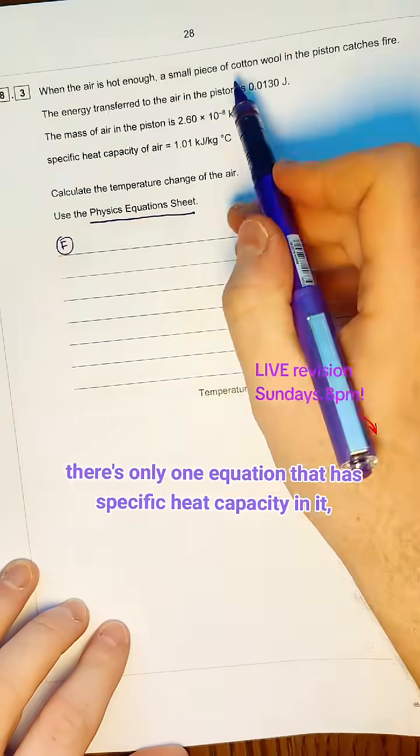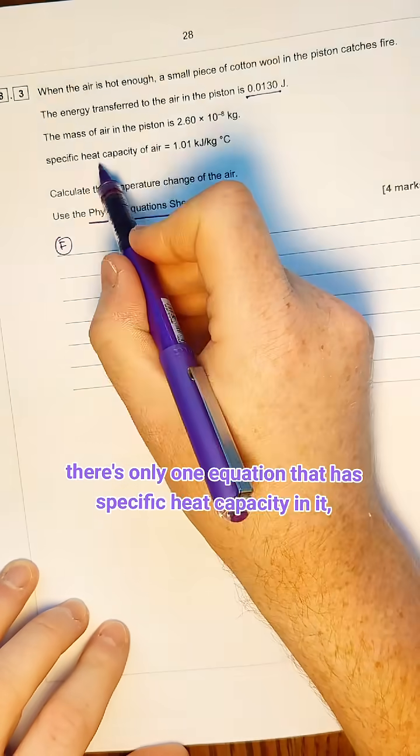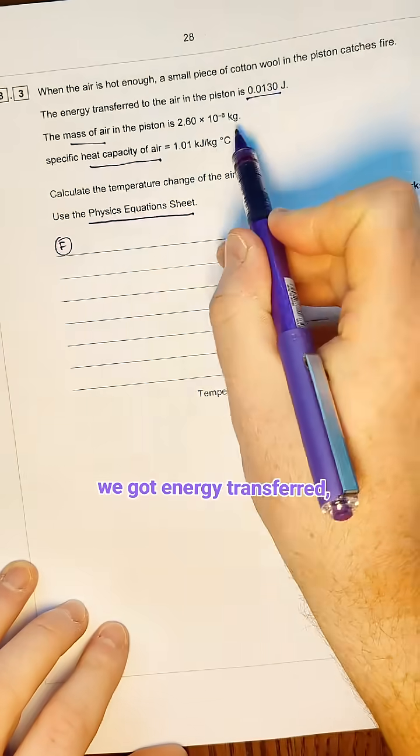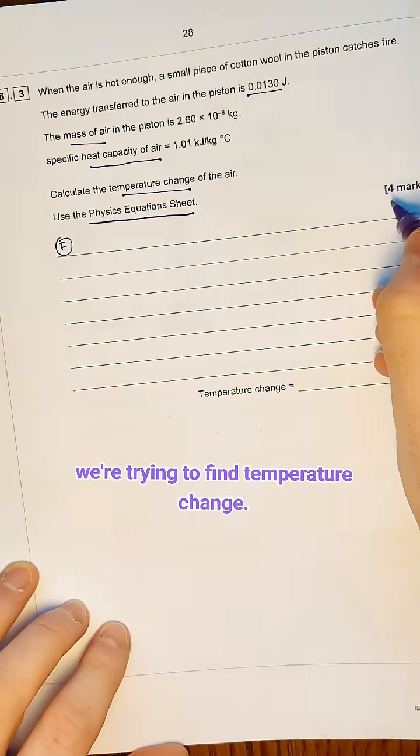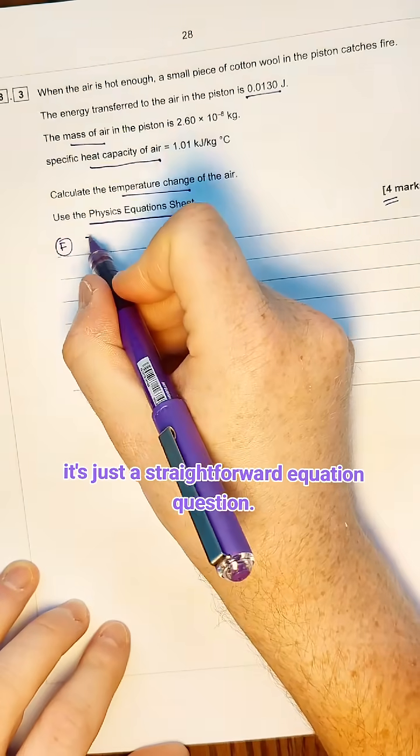So I'm going to use this now. There's only one equation that has specific heat capacity in it, which is great. We've got the mass, we've got energy transferred, we're trying to find temperature change. So even though it's four marks, it's just a straightforward equation question.